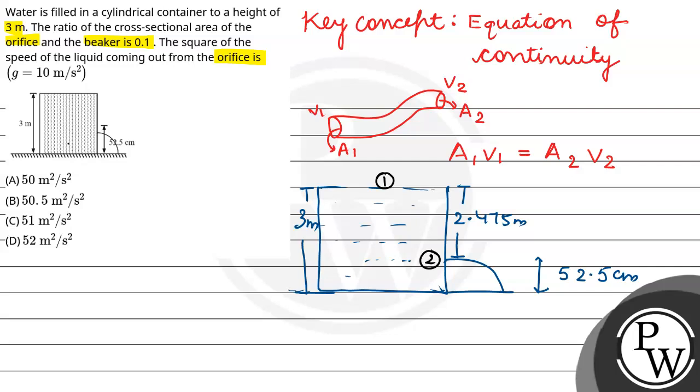Now let's use equation of continuity. A1V1 equals A2V2. A2 by A1 equals 0.1. The ratio of cross-sectional area of orifice and the beaker is 0.1.